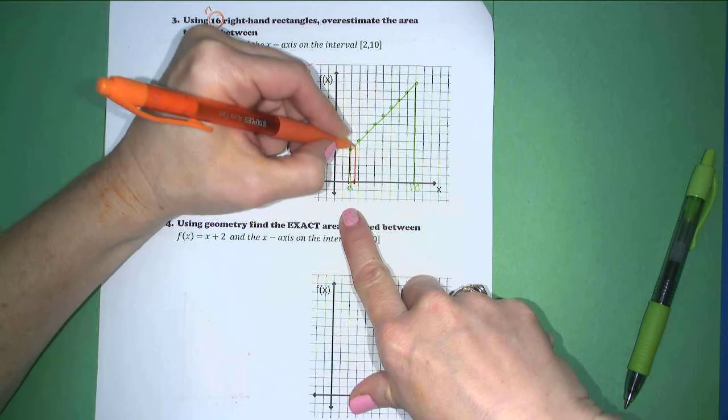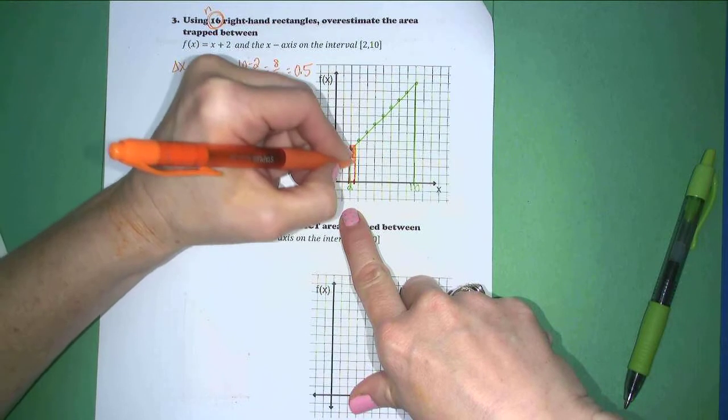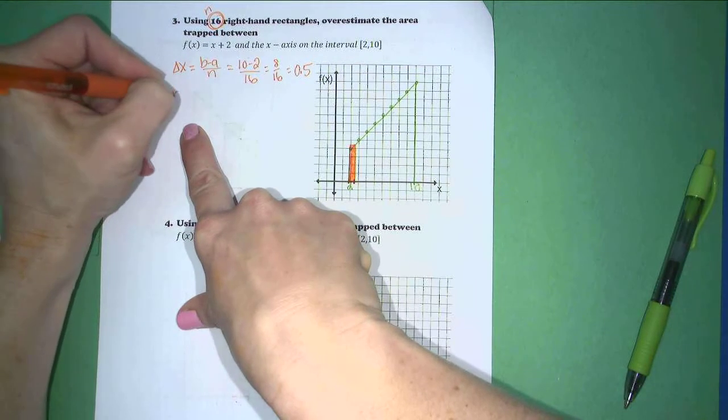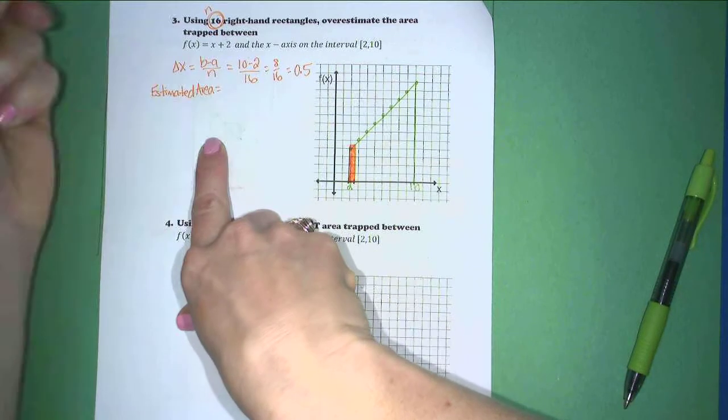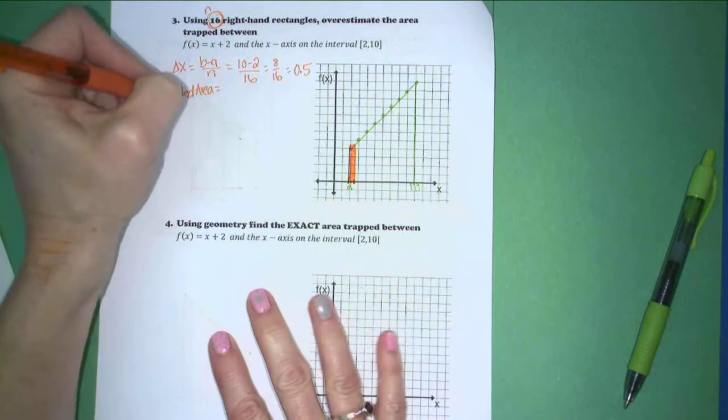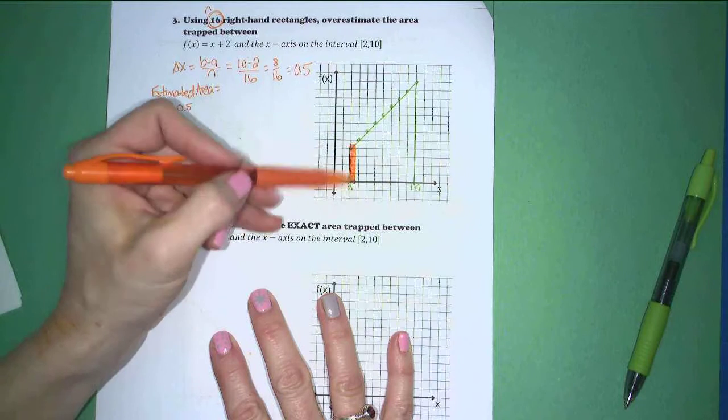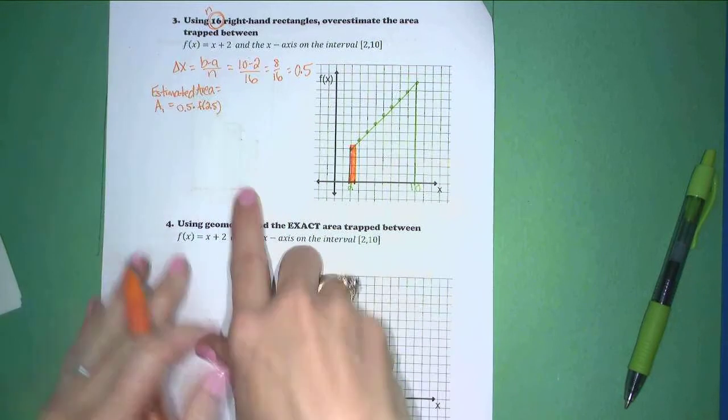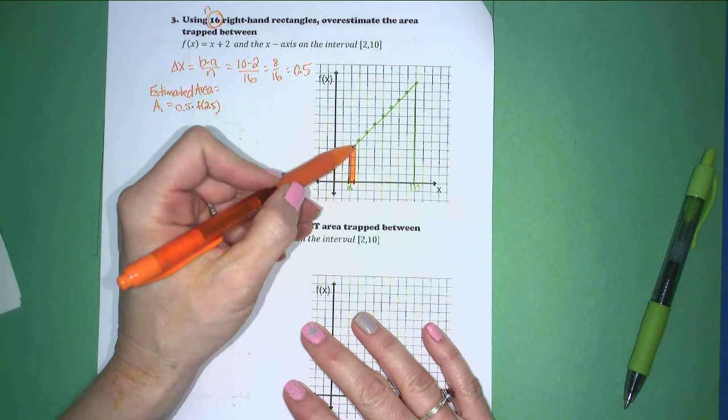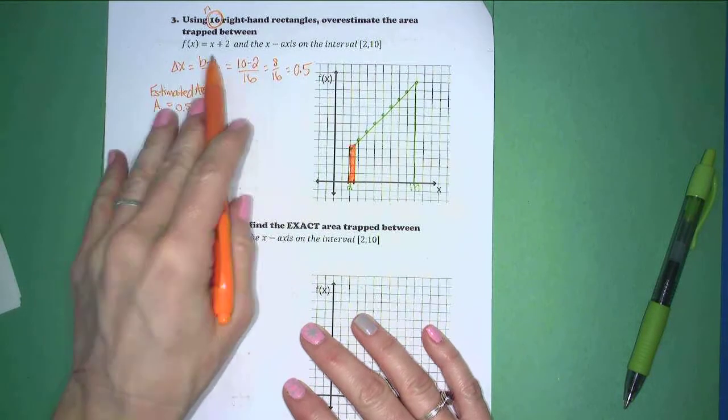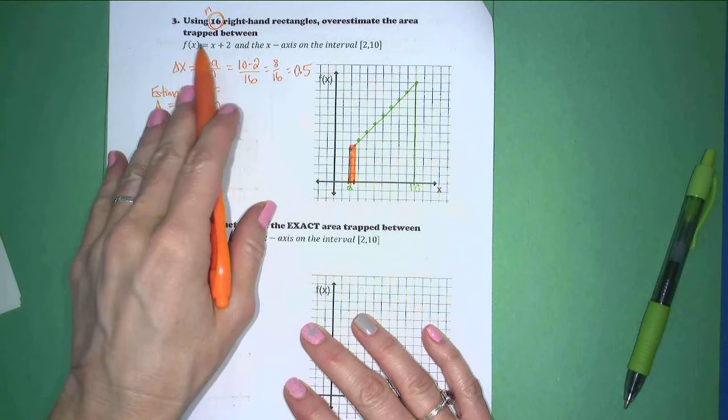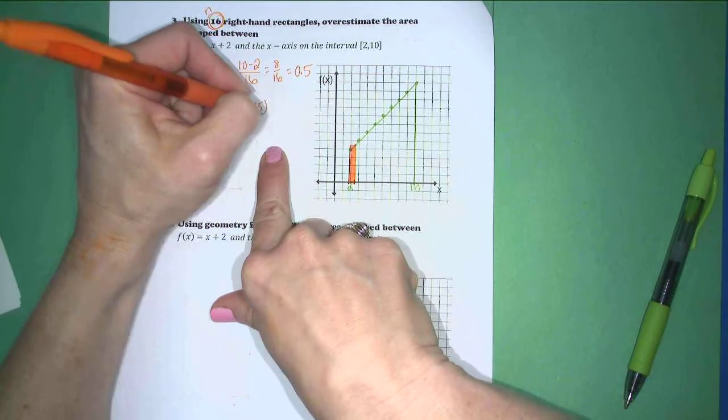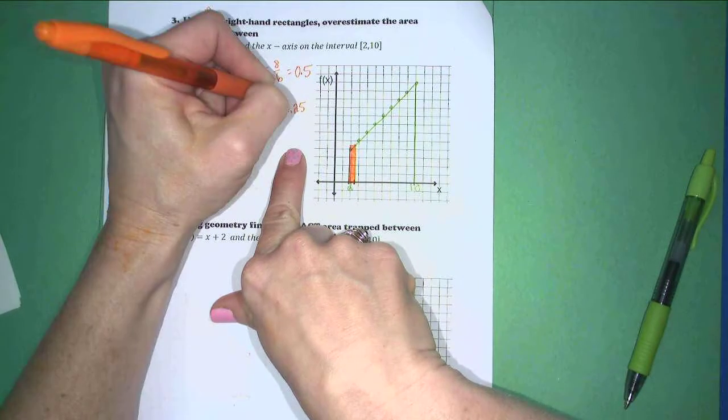I think I'm going to do these areas as I go, so it doesn't get too confusing at the end. So let's just do the area of this first rectangle. Estimated area with 16 rectangles will be the first area, area 1, is going to be 0.5 as my base. My height is going to be f of 2.5. I have to evaluate my function when x is 2.5 to get that first right-hand rectangle height. So if I go up to my function here, f of 2.5 is 2.5 plus 2, so this is going to be 0.5 times 4.5, which is equal to 2.25. So that's my first area.